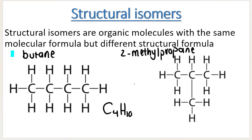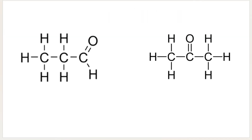Count the number of carbons in both, count the number of hydrogens in both — you will come to the same molecular formula. We can also take a look at something like this: very different organic molecules, very different compounds with different structural formulas. This one is actually an aldehyde, this one is actually a ketone. However, different structural formulas but the exact same molecular formula: C3H6O.